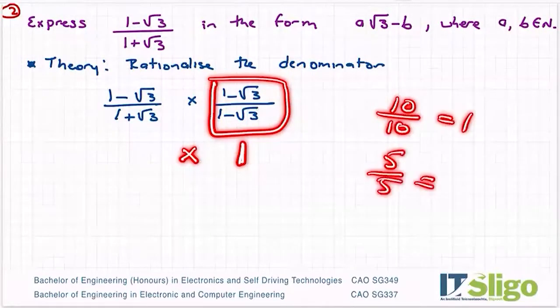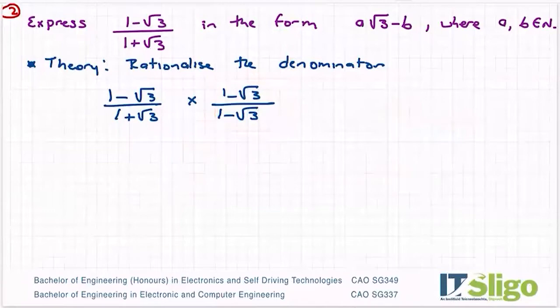Five over five is one. One minus root three over one minus root three is one. And you know when you multiply anything by one, you don't really change it. So we need to multiply.